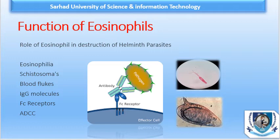Immunoglobulin molecules are involved, and eosinophil have Fc receptors for antibody on their cell membrane. Opsonization then takes place and they bind very tightly, which damages the organisms. This is the best example of ADCC — Antibody-Dependent Cell-mediated Cytotoxicity.